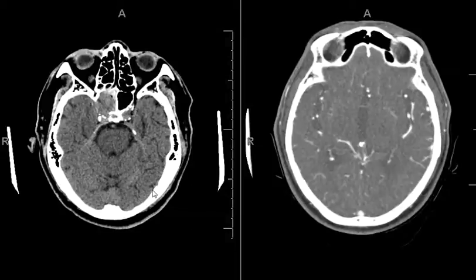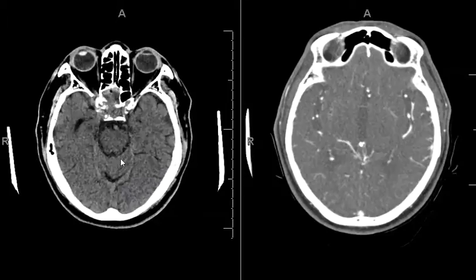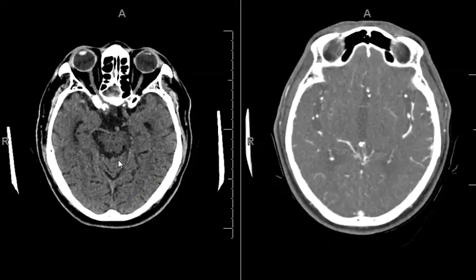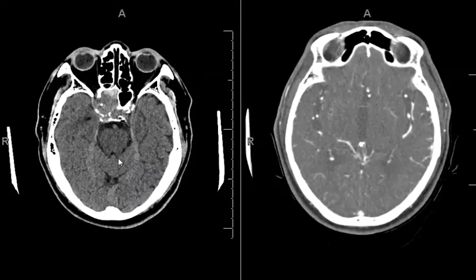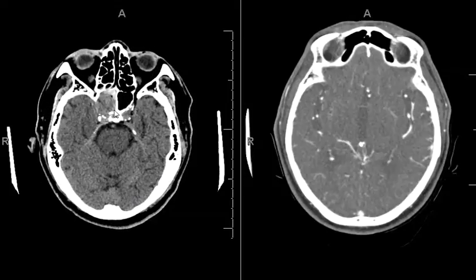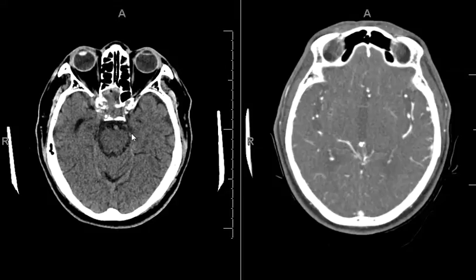Approximately two months later, this patient presented to the ER with headache, severe nosebleed, and also right eye vision loss. A CTA was performed, and here's the non-contrast portion of the CTA — you can see complete opacification of this right sphenoid sinus.